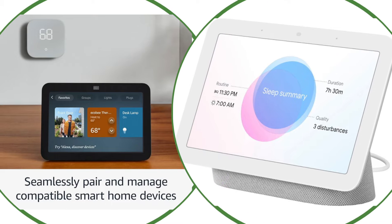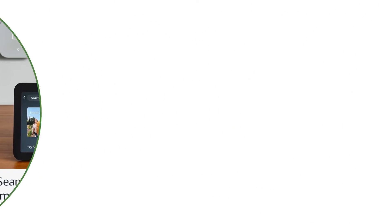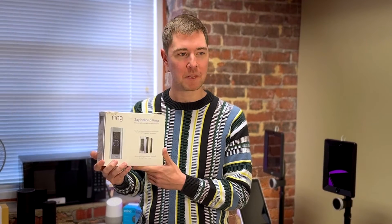Smart home devices and environmental controls can also be very useful for individuals with significant motor disabilities for controlling lights and electronic devices. Watch Hunter McFerrin of Tools for Life demonstrate several AT tools and smart devices for environmental control.